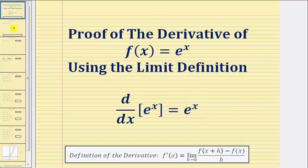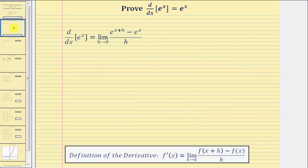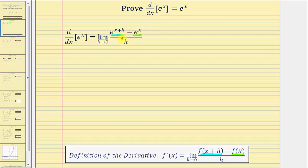To begin, we'll apply the limit definition of the derivative. So we have the derivative of e to the x with respect to x equals the limit as h approaches zero of: for f of the quantity x plus h, we have e raised to the power of x plus h, and then minus f of x, which is minus e to the x, all divided by h.